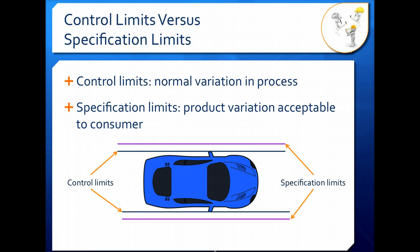Control limits are not the same thing as specification limits. The control limits represent the normal variation in our process, or what our process is capable of producing — the range in moisture content, protein content, flavor, or texture. The specification limits are the product variation that's acceptable to our consumer or customer. So this doesn't necessarily line up with our control limits.